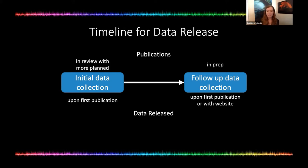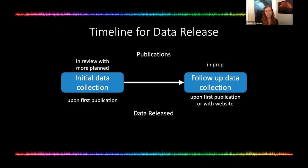For the initial data collection, a publication using that data is currently in review. The dataset will be made available on an open access data repository upon publication as Excel spreadsheets, updated and versioned from 2018 to 2020 and beyond. Two publications are in preparation from the follow-up data collection, and the dataset with more detailed information will be published either alongside those publications or with the website. The hope is that this data will prove useful for other researchers, and we are open to collaborations.